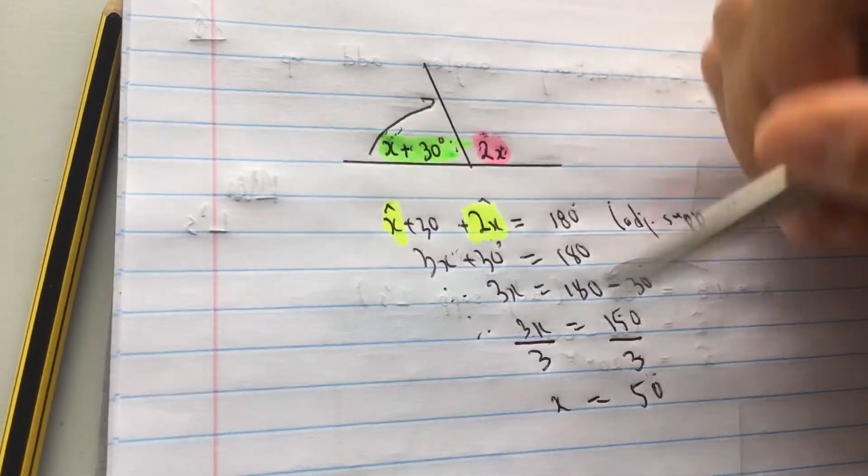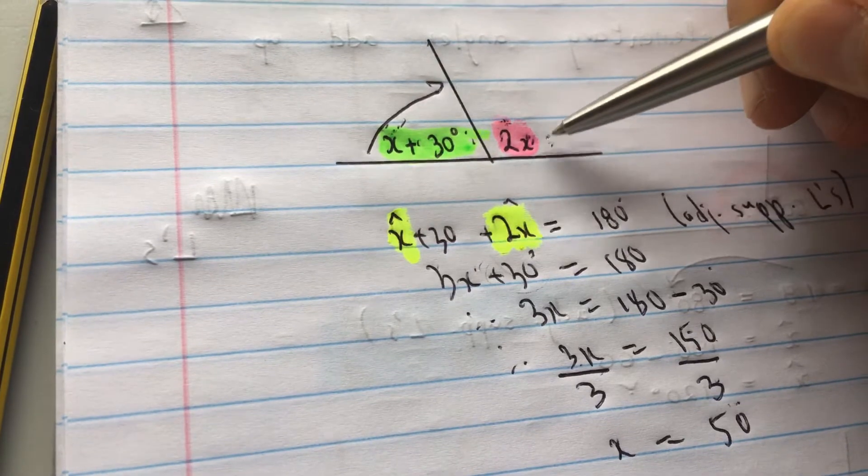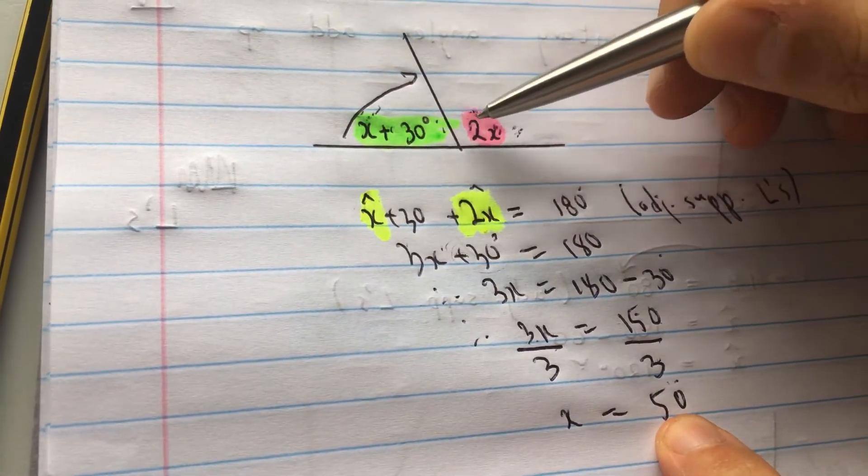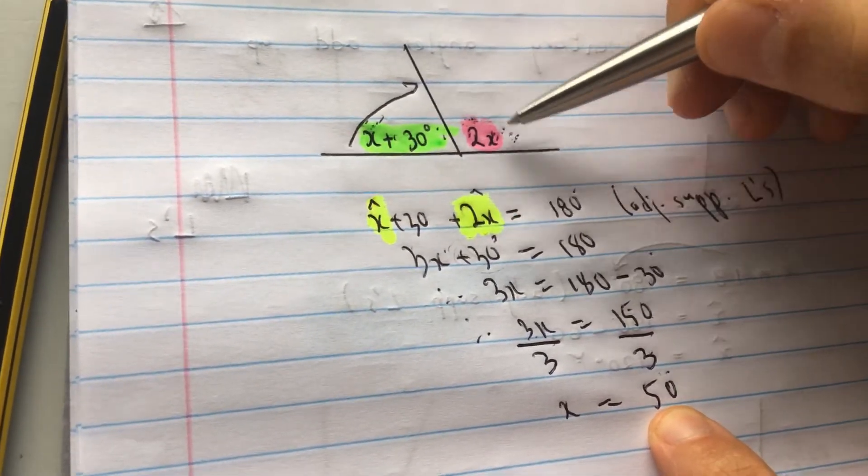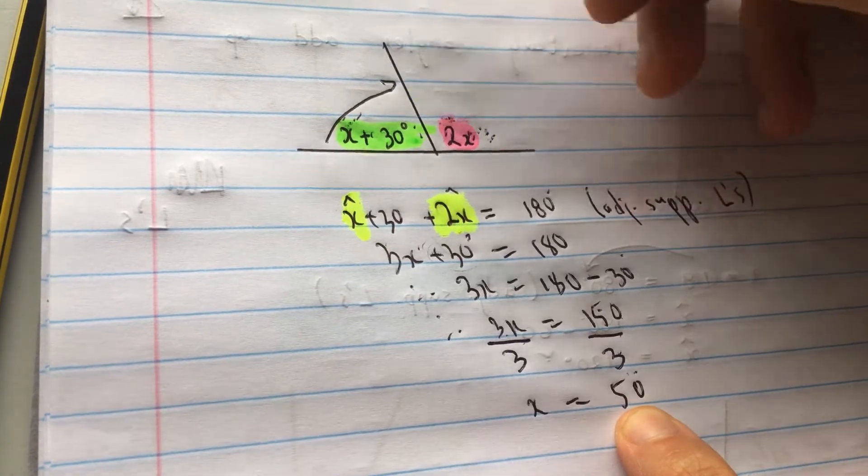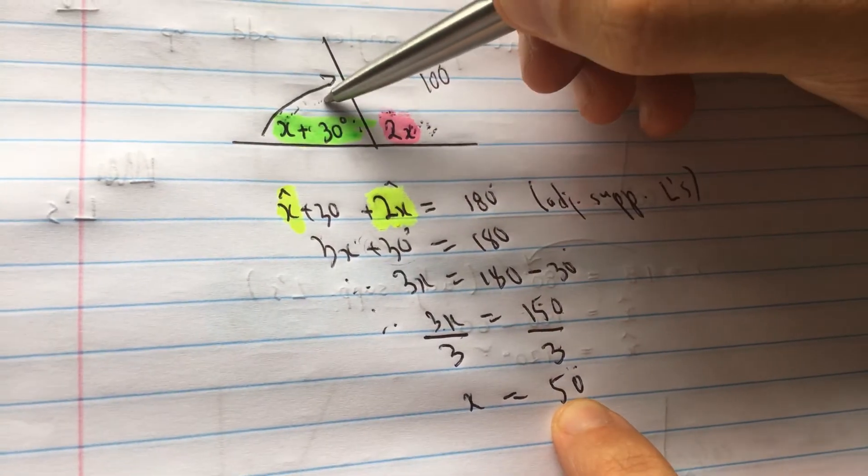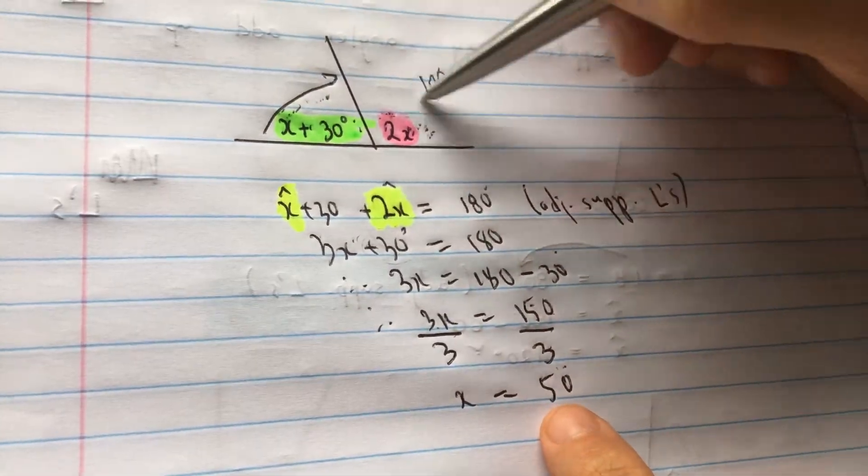x equal to 50. Now I want to show you something. If x is equal to 50, how much is this angle over here? It's x is equal to 50. This is twice x. 2x. So it's 2 times that. So how much is this angle then? This angle then is 100 degrees. Then this angle has to be 80. Let's see if it is 80. Because angles on a straight line add up to 180 degrees. So if this is 100, this has to be 80.